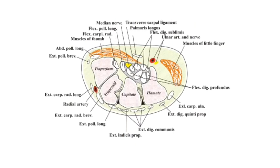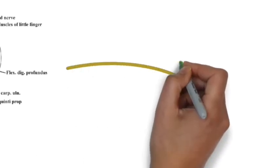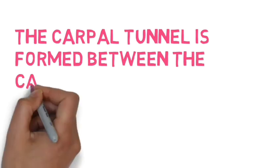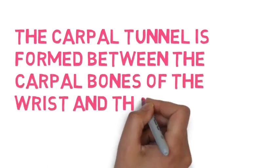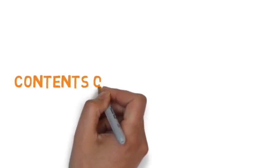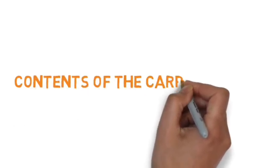The carpal tunnel is formed by the carpal bones and the transverse carpal ligament. It is a compact space where the carpal bones form the floor and the transverse carpal ligament forms the roof. The contents include nine flexor tendons and the median nerve.